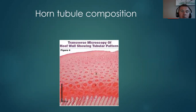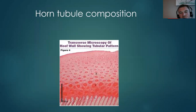The hoof wall tubules are bound together by intertubular horn. Each horn tubule has intratubular horn and they're bound together. These tend to grow in a straight line in the normal hoof, but in collapsed, low, weak heels, these tend to bend as they make contact with the ground.